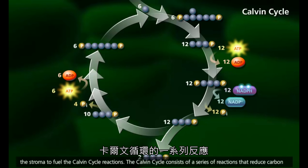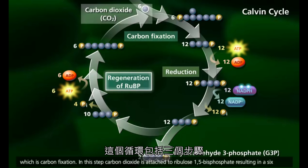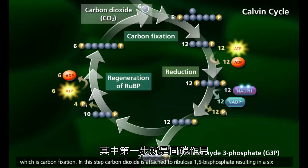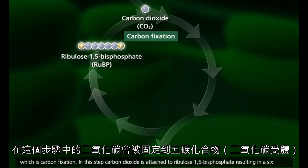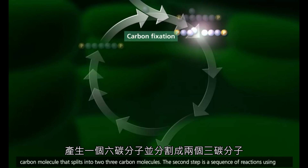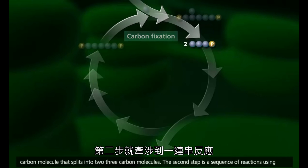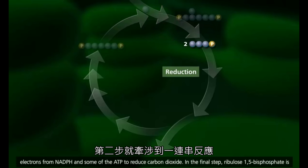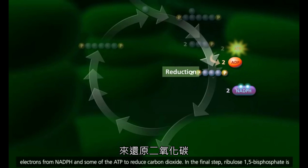The Calvin cycle consists of a series of reactions that reduce carbon dioxide to produce the carbohydrate glyceraldehyde-3-phosphate. The cycle consists of three steps, the first of which is carbon fixation. In this step, carbon dioxide is attached to ribulose-1,5-bisphosphate, resulting in a six-carbon molecule that splits into two three-carbon molecules. The second step is a sequence of reactions using electrons from NADPH and some of the ATP to reduce carbon dioxide.